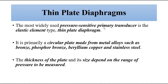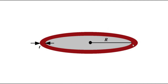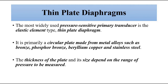The thin plate diaphragm falls in the primary transducer category — it does not produce any electrical output; it only produces mechanical movement or displacement. It is an elastic type device. The basic design is circular, with a certain radius R and a certain thickness. They are made from metal alloys such as phosphor bronze, beryllium copper, stainless steel, and other suitable alloys, depending on how much pressure it will be subjected to and what environment it will be placed in.